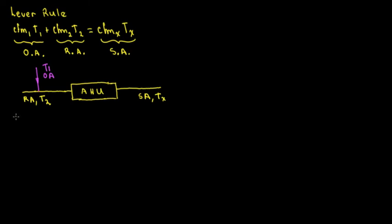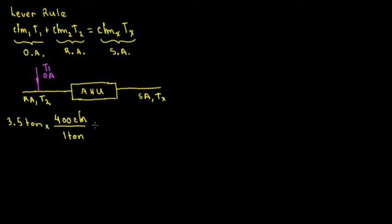Say that we have a 3.5-ton unit. What is the design CFM we need? As we know, we're going to use the rule of thumb which is 400 CFM per ton. So for a 3.5-ton unit, we're going to need 1,400 CFM. That's going to be the supply air — 1,400 CFM — and the return air is also going to be 1,400 CFM.